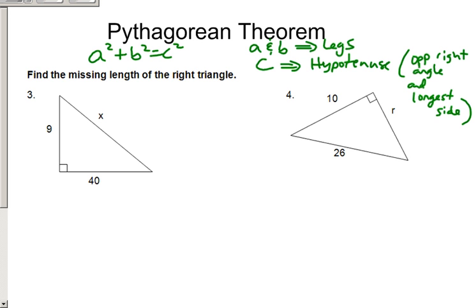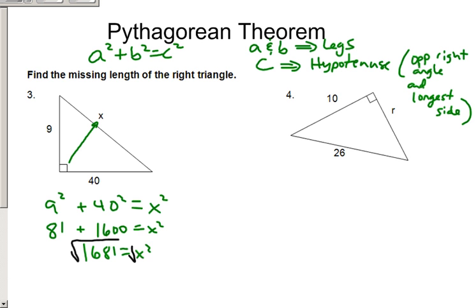So number three here, I have 9, 40, and X. Well, the side opposite right there is a hypotenuse, so I can say 9 squared plus 40 squared equals X squared. This is going to give me 81 plus 1600 equals X squared. This gives me 1681 equals X squared. How do we get rid of squares? We square root both sides. We're going to get that X value equals 41. So the missing side length equals 41.